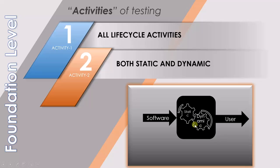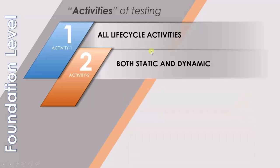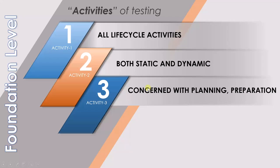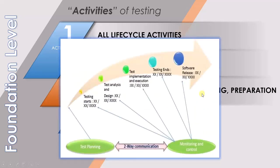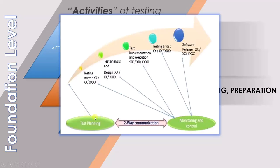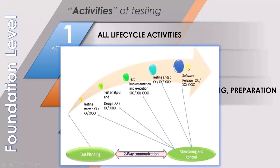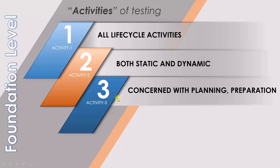So testing is a lifecycle activity and it can be both static and dynamic. The third point is that testing is concerned with planning and preparation. Before you start testing, you have to create a roadmap — when you will begin, when you will analyze your requirements, when you will implement your test cases, when the testing will end, and when the software will be released. This is how the third point comes into play.